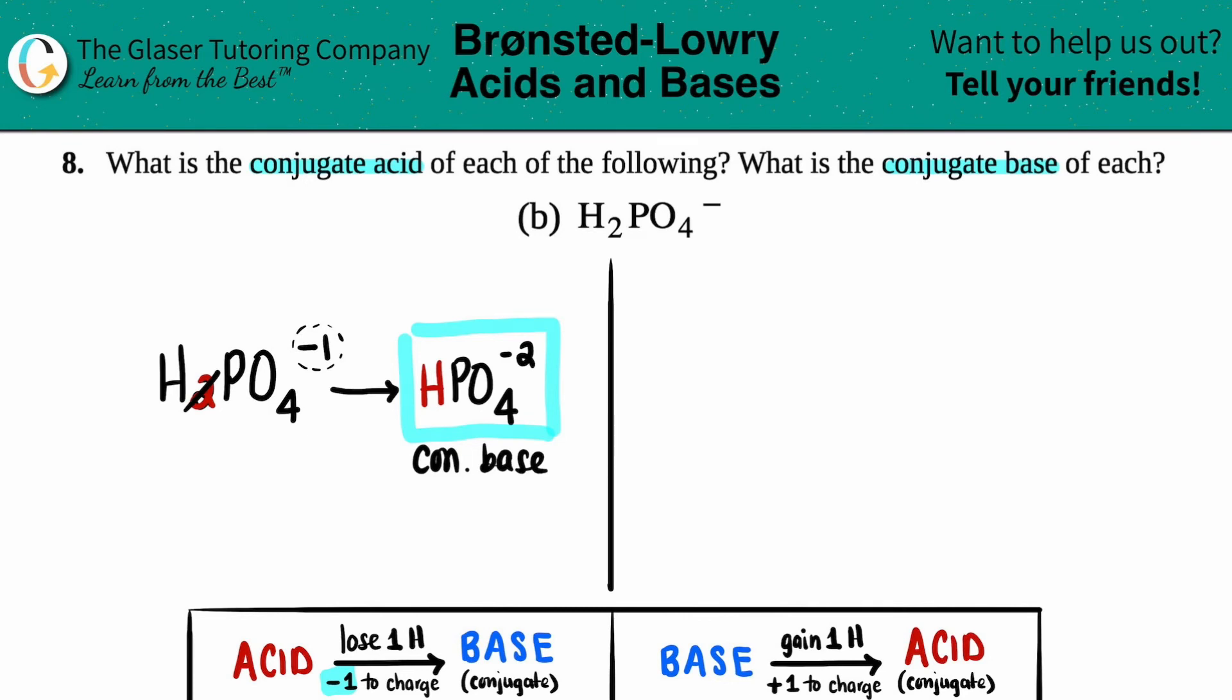Now we just have to do the same thing, but let's pretend that H2PO4 was acting as a base. Now we just have to find the conjugate acid. On the flip side, an acid is always one more hydrogen than its base. So you got to gain one.